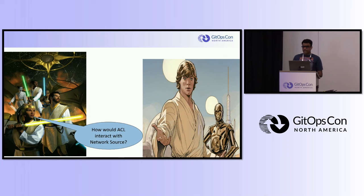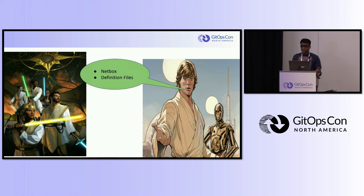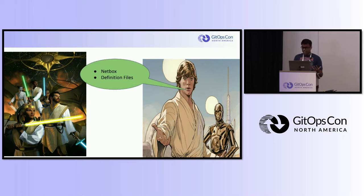Now that we've defined ACL components, how does the solution interact with a network source of truth? There are two ways. The first is a tool like NetBox, an open source web application for managing and documenting network infrastructure that acts as a central repository for network information including IP addresses, VLANs, and device configuration. NetBox would provide all the relevant data required to manage ACL definitions. Your second option is to use definition files in YAML or JSON format to specify the network information required for ACL generation. These files can be manually created or automatically generated from other sources and fed into ACL generation tools.